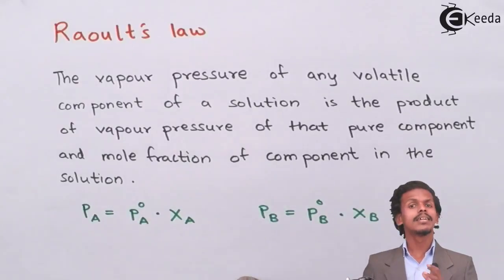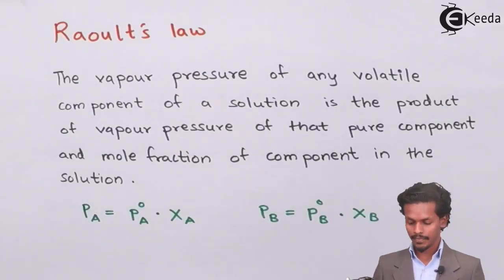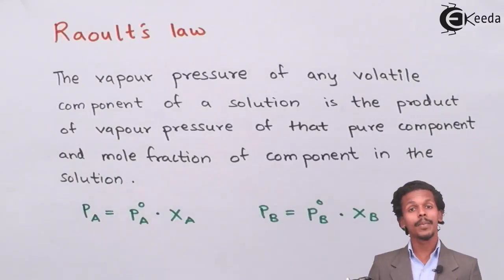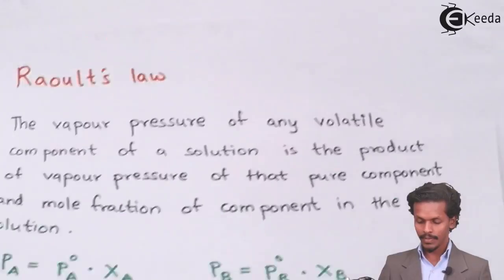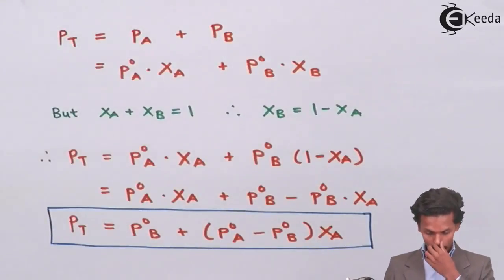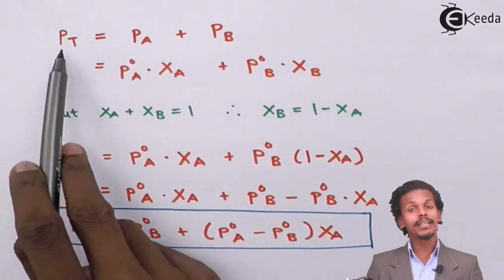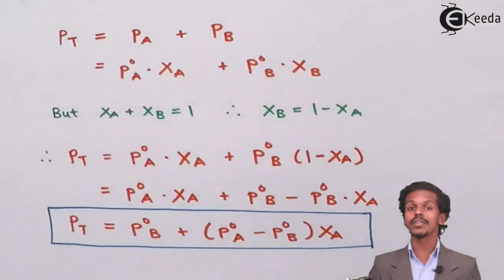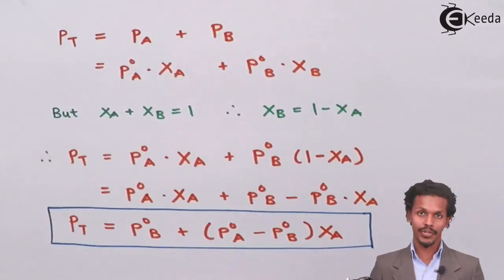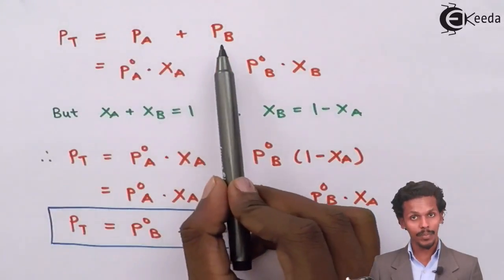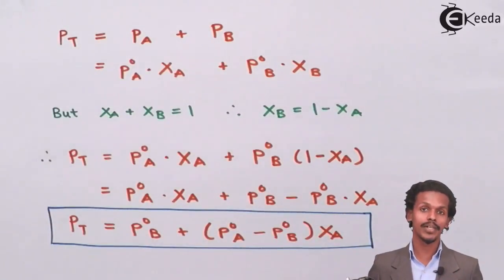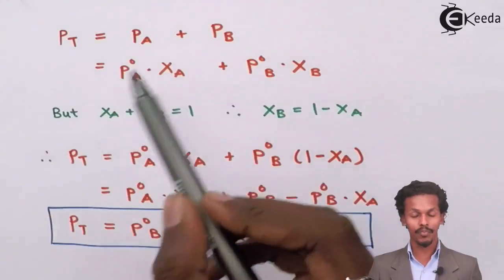Let us derive an expression for vapor pressure of a solution according to Raoult's law. P T means the vapor pressure of the total solution, and since it is made up of two components, P of A and P of B, the vapor pressure is composition of the two components' vapor pressures.